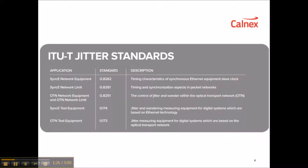So let's talk about ITU Jitter standards. There are three categories of ITU standards: standards for the amount of Jitter network equipment can generate and tolerate, standards for the amount of Jitter present in the network, and standards covering the accuracy of Jitter test equipment.